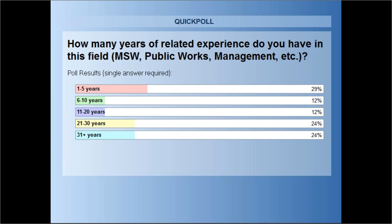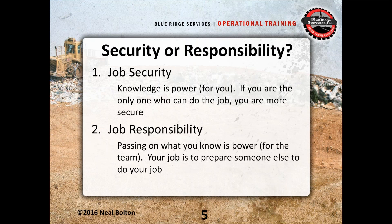Let's talk about job security versus job responsibility. Knowledge is power for you — if you're the only one who knows how to do your job, you're probably pretty secure because they can't let you go. But power for the team is when you hand things off. When you prepare someone else to do your job, you are empowering your team and making it stronger and more likely to continue on after you retire.